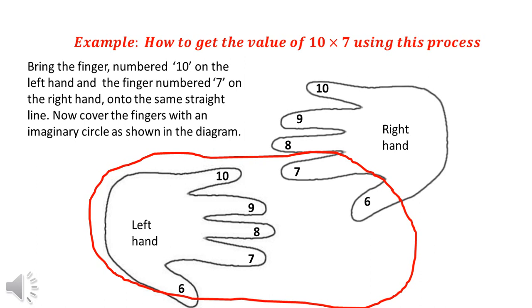Here, we have taken another example to demonstrate the process. In this part, we are multiplying 10 into 7. Similarly like before, we bring the specific fingers pointed towards each other as shown in the diagram.